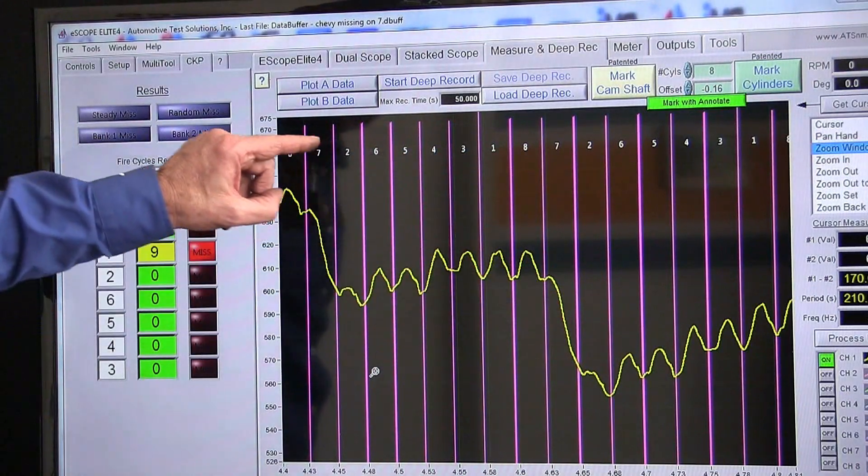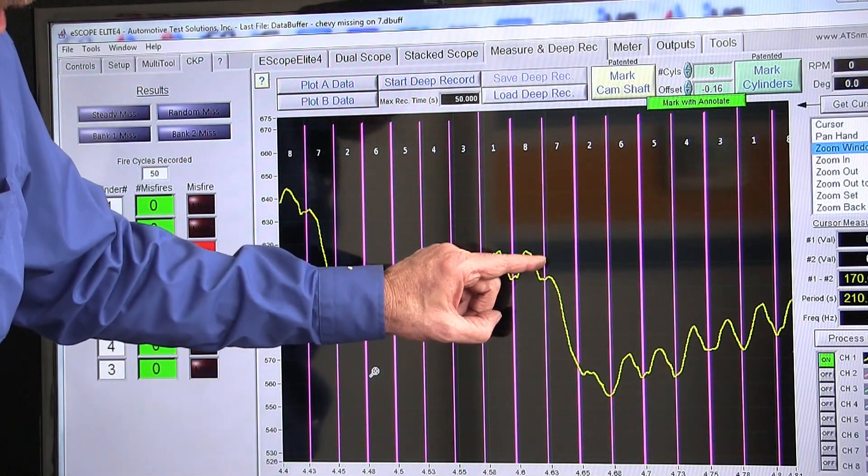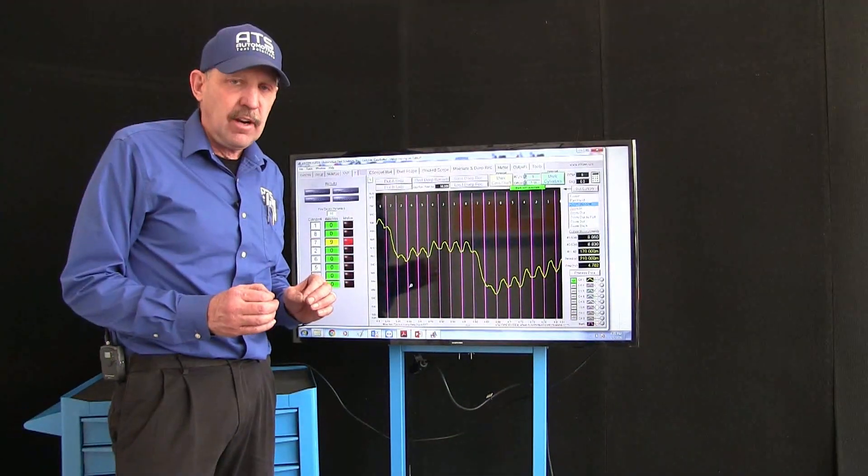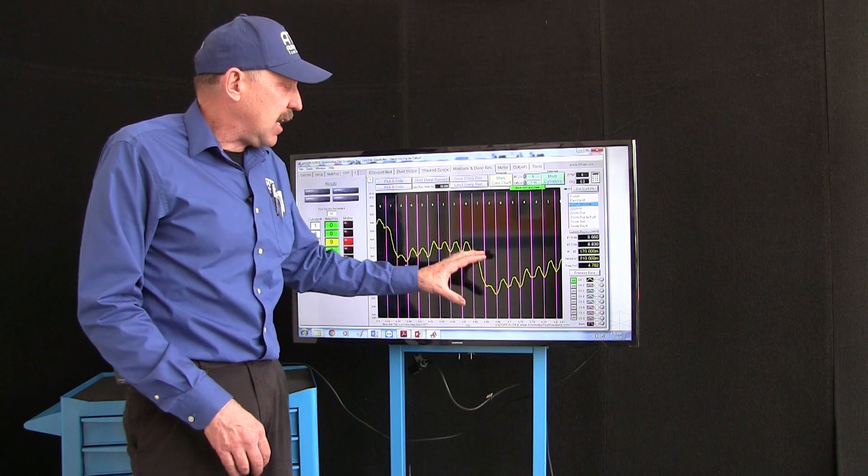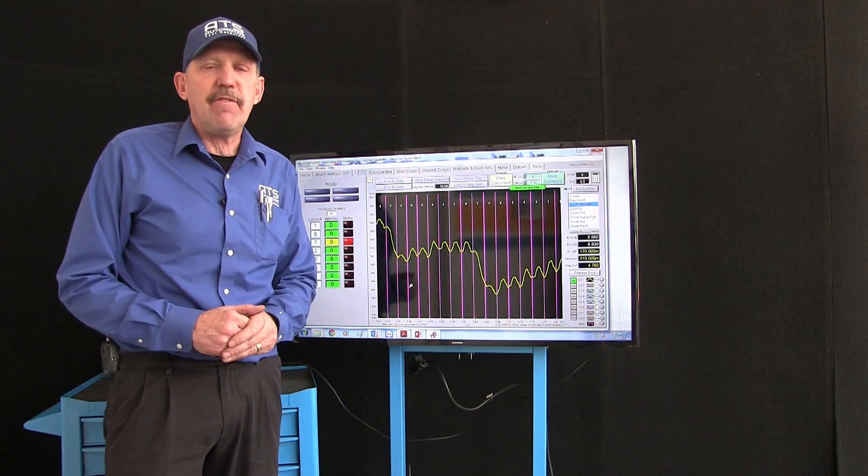Now we have cylinder 7 miss and it's because once we fired I did not get a faster turning crankshaft. In this case it's indicating that we have missed fires and we've located on cylinder 7.